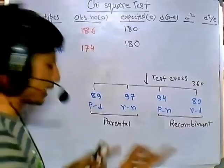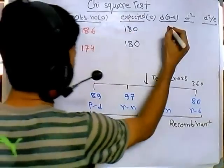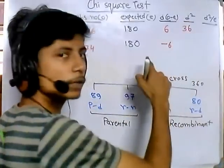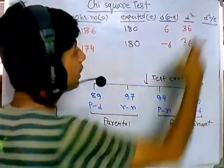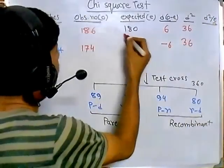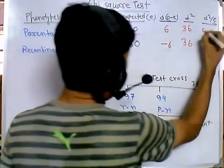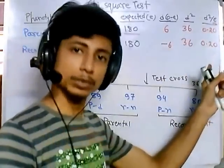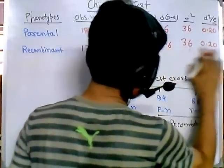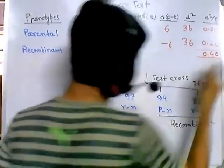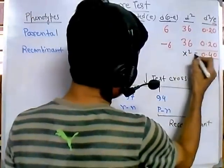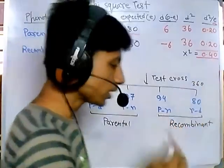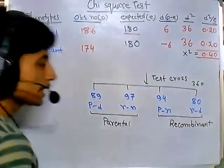Now the difference o minus e: 186 minus 180 equals 6, and for recombinant it is minus 6. We square both differences to get 36 and 36. Then d squared divided by e: 36 divided by 180 equals 0.20, and similarly 0.20. We sum these values: 0.20 plus 0.20 equals 0.40, and this sum is termed the chi-square value. So the chi-square value here is 0.40.